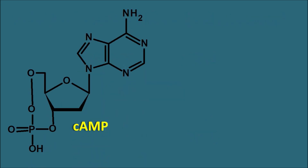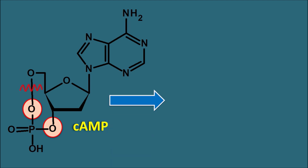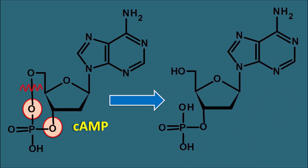Looking at the structure of cyclic AMP, the phosphorus group is attached to two oxygens, which form two ester bonds — making it a phosphodiester. This bond can be cleaved by phosphodiesterases. The cyclic AMP is thus converted into AMP, with one of the ester bonds cleaved at the 5' position by phosphodiesterase enzymes.